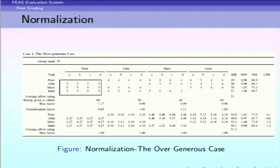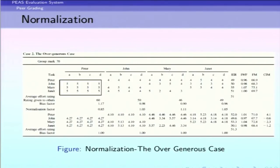Applying the normalization factor, a score Peter intentionally gave as 5 to everyone gets reduced to 4.27. In normal cases, scores may rise slightly — for example, Janet's score rose from 4.85 to 5.23. This normalization process is recursive and continues until the bias factor falls within the range of 0.98 to 1.02, at which point the scores are considered normalized and represent what students actually deserve.